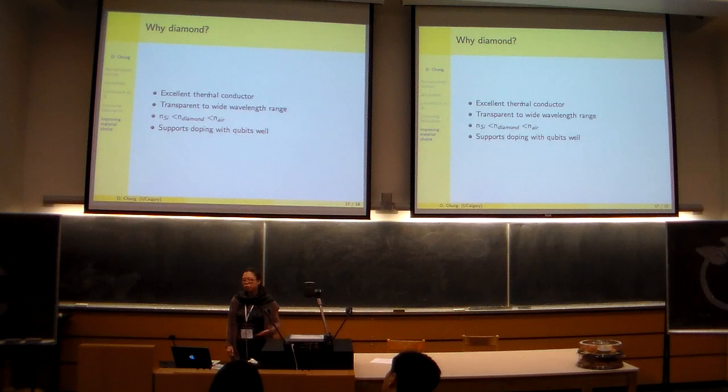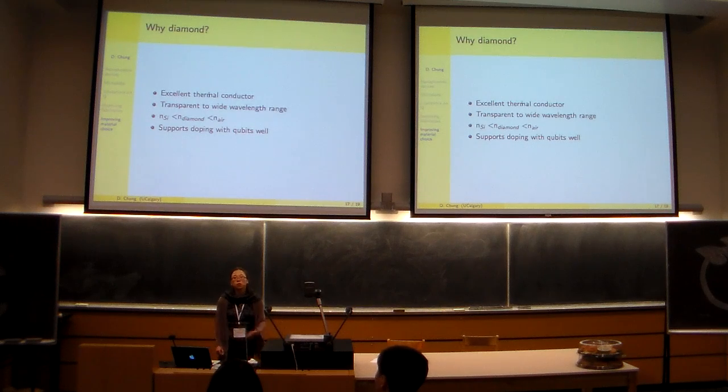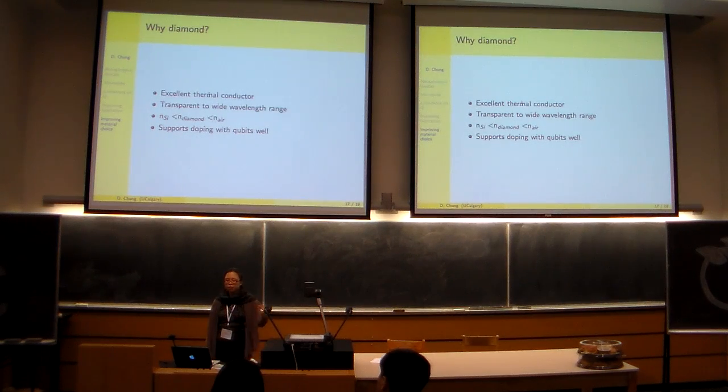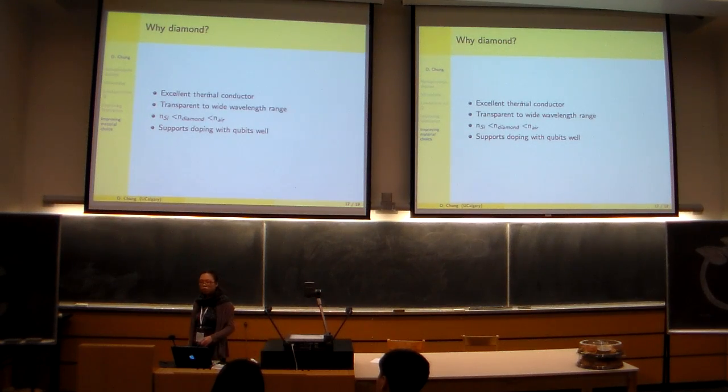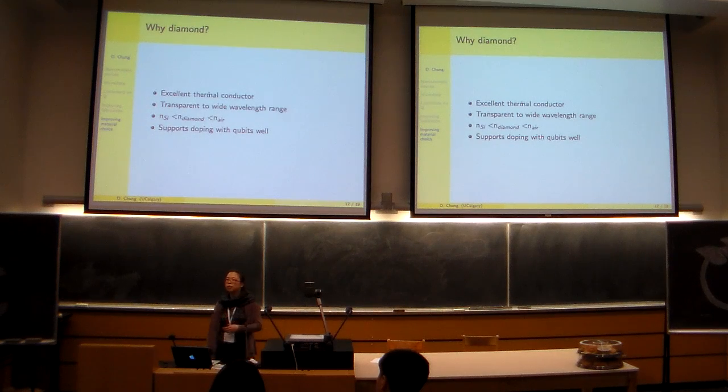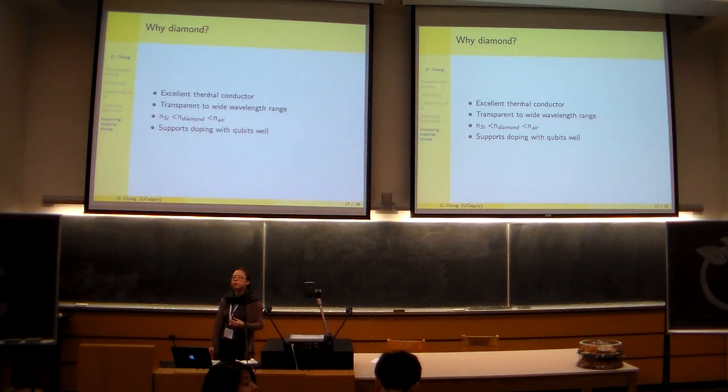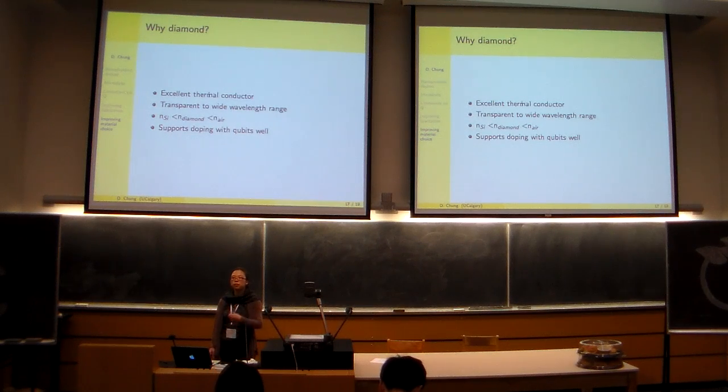So we move on to diamond. We're experimenting with diamond because diamond is an excellent thermal conductor. It's transparent to a wide range of wavelengths. So we're not restricted to the infrared. We can also use silicon carbide or gallium nitride. The index of refraction of diamond is between silicon and gallium nitride. So light is still confined in diamond. Also, for our interest in quantum computing, diamond supports doping defects such as nitrogen vacancy center impurities.